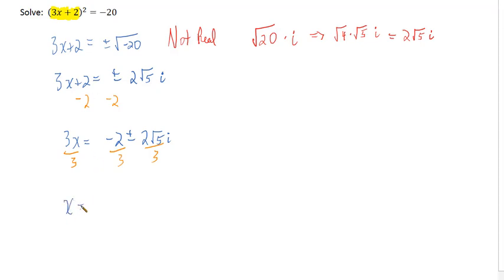So then x equals negative 2 thirds plus or minus 2 root 5 thirds i. And again, like we've seen in some previous exercises, we can break this out into two solutions, two numbers.